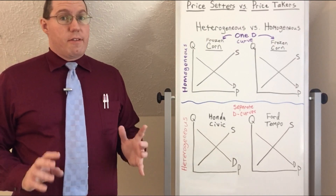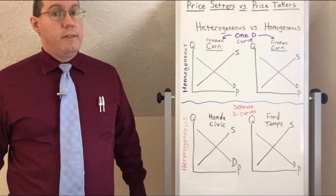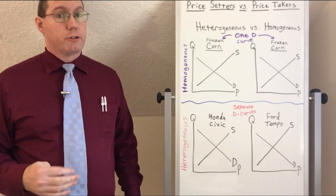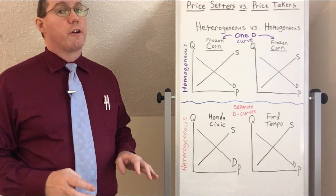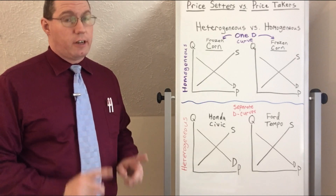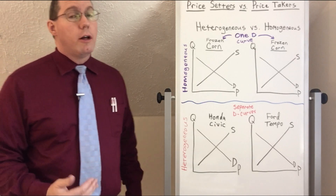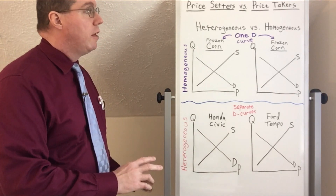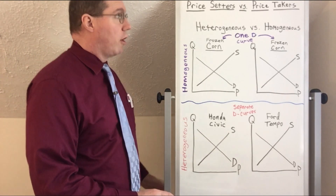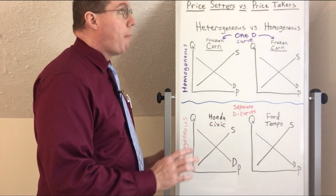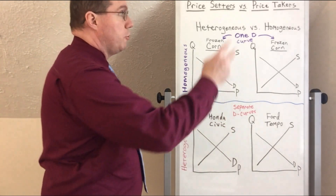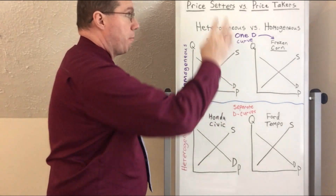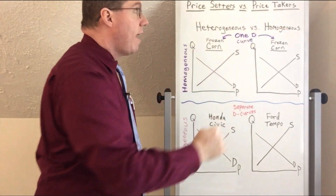In the last four lessons of this semester, we're going to cover the four different market structures. In today's lesson, we're going to focus on perfect competition. To understand perfect competition, we have to look at two dimensions of market structure: market power, which is an issue of whether a company is a price setter or a price taker.